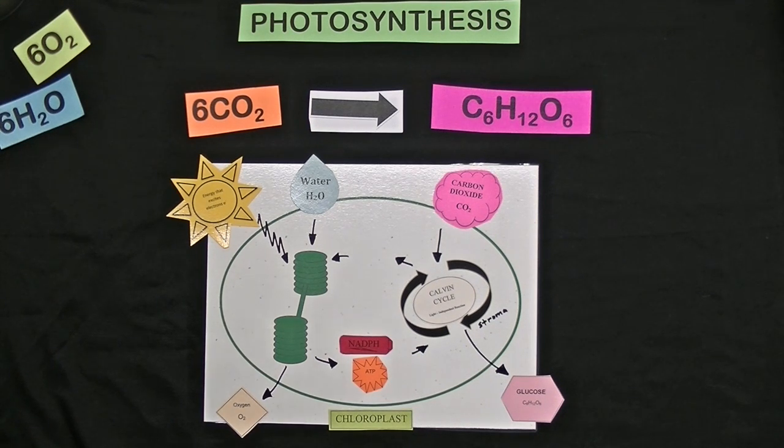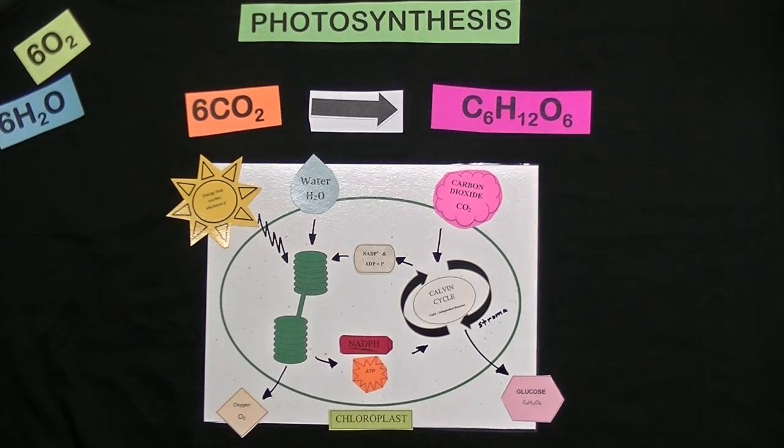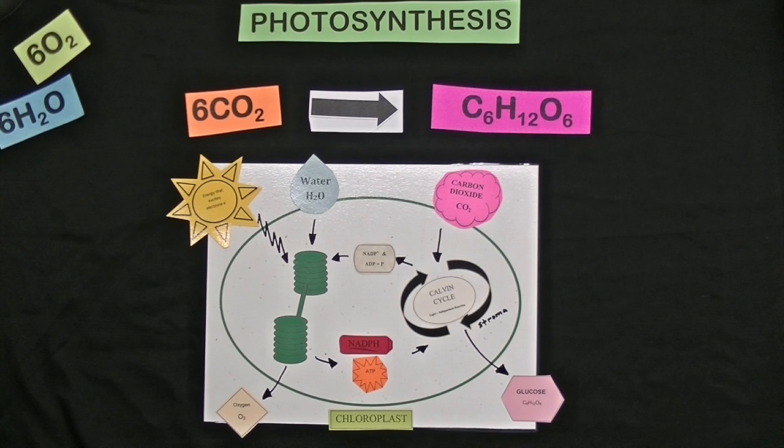The chemical batteries get used up and get cycled back into the thylakoid membrane for the cycle to start all over again.